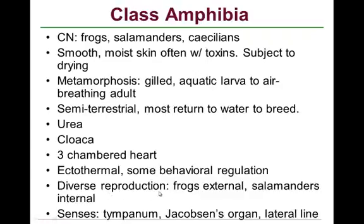Amphibians can control their body temperature to a limited extent through behavior — when cold, they'll get in the sun; when hot, they'll seek shade or water. That's behavioral thermoregulation. Their senses include a tympanum (eardrum) — the round discs you see on frogs' heads. They also have a Jacobson's organ, a chemosensory organ in the roof of the mouth. As larvae, they have lateral lines just like fishes.